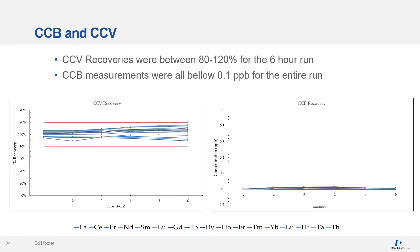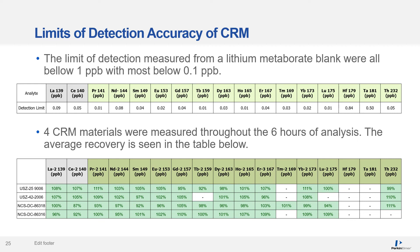CCV recoveries were between 80 and 120 percent for the entire six hour run and CCB measurements were well below 0.1 ppb for the entire run. The limits of detection and accuracy of CRM materials was also measured for all rare earth elements. Detection limits measured from a lithium metaborate blank were all below 1 ppb with most below 0.1 ppb. Four CRM materials were measured throughout the six hour run, with average recoveries all between 90 and 110 percent, demonstrating good stability and robustness for these very high TDS matrices.